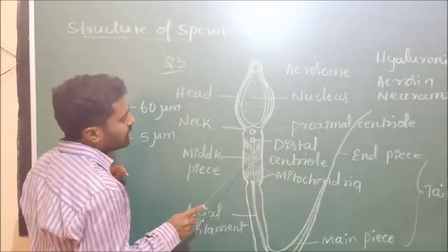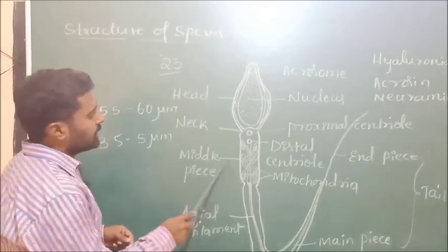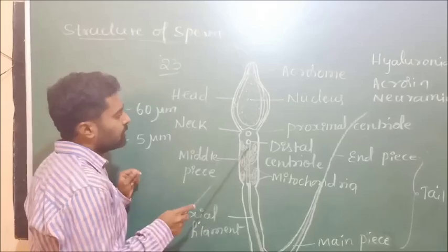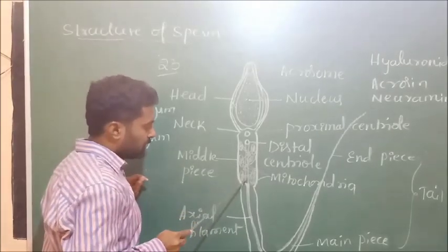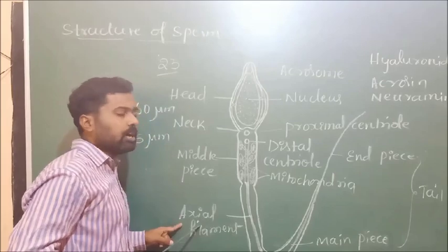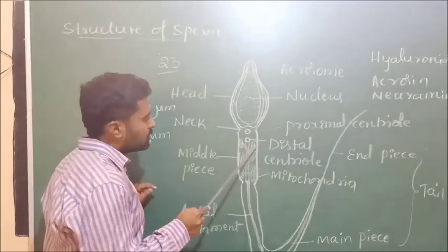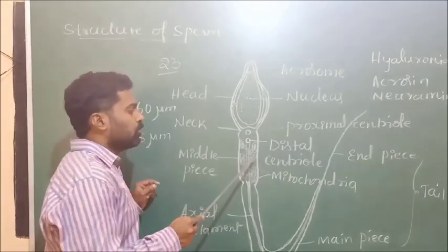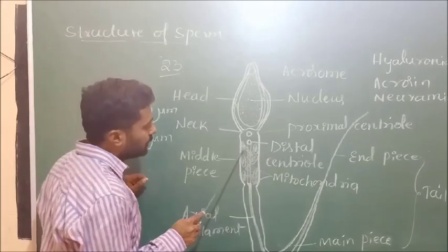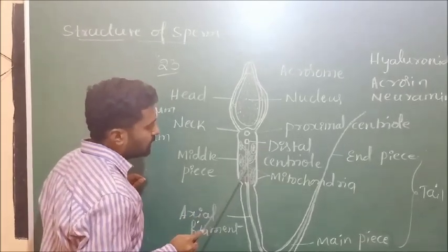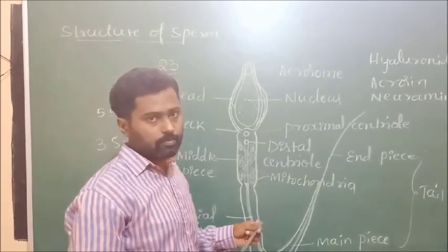The middle piece mainly encloses the central distal centriole that continues as the axial filament or axoneme. It consists of spirally arranged mitochondria — about 10 to 14 spirals. The mitochondria in the middle piece mainly provide energy for the motility of the sperm.